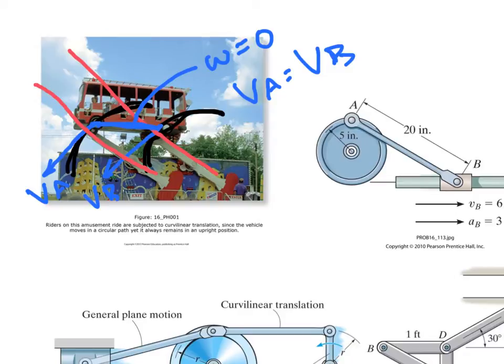That is the general conclusion when we find omega equals zero: the link is in translation only. Even if it's curvilinear translation, it is still translation, and at this instant VA is equal to VB.